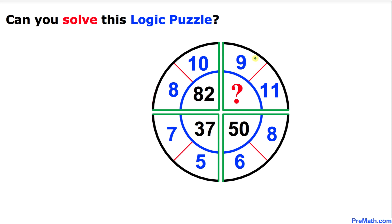If we look at the second quadrant over here we got these numbers 10 and 8 that give us 82. And these 7 and 5 is going to give us 37. 6 and 8 are going to give us 50. Now the question mark is in this first quadrant: 9 and 11 is going to give us what number?